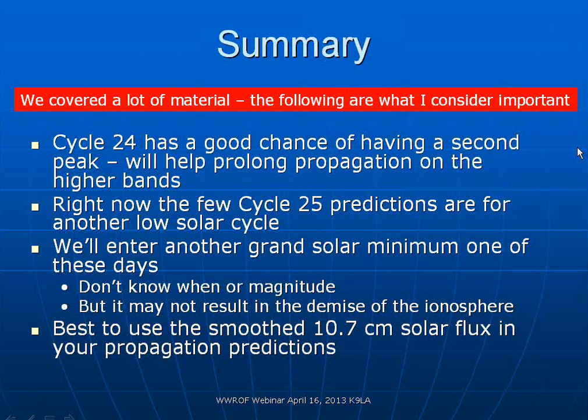Gary W9XT asks: do the different UV wavelength levels track well with each other or do they vary? I think they track pretty well together. I've had access to limited wavelength ranges, but my guess is different EUV wavelengths probably track very well together. I used the 26 to 34 nanometer range because it was easily available and is responsible for about two thirds of the electrons in the F2 region — so that made sense to use.